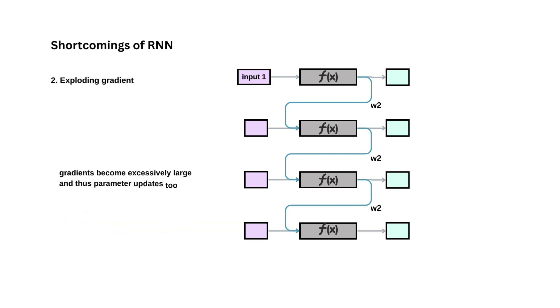Exploding gradient is opposite of vanishing gradient, where value of W2 greater than 1 causes the weight updation to have high values and thus finding optimal value becomes challenging. Here, the value of W2 is, say, 2. So, as the RNN unfolds, input 1 keeps getting multiplied by 2. For 100 time steps, input 1 will be multiplied by 2 raised to power 100, which is a very huge number, leading to exploding gradient.